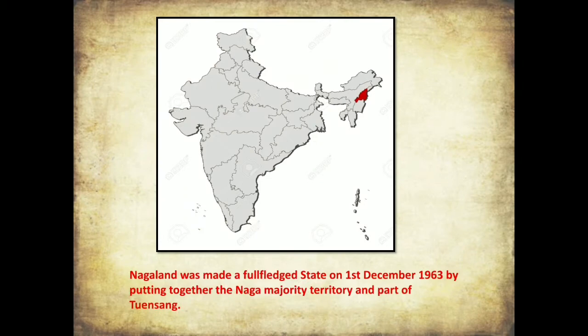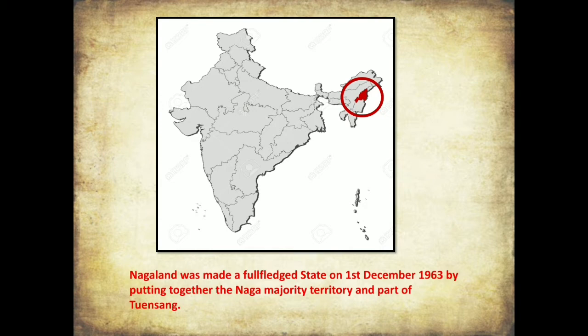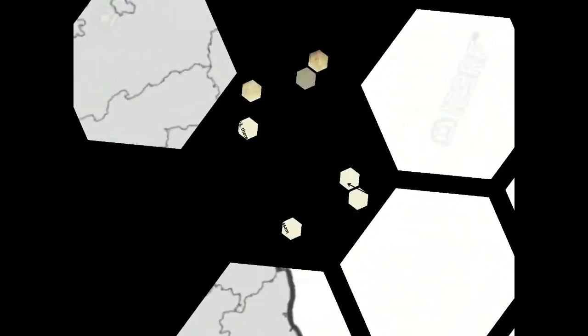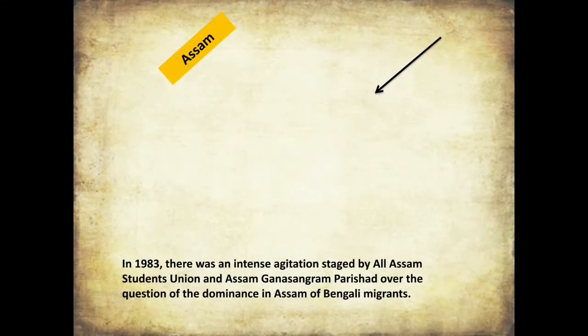After several rounds of discussions between the central government and the Naga National Council, the central government decided to grant the Naga-majority territory the status of a Union Territory. Nagaland was made a full-fledged state on 1st December 1963 by combining the Naga-majority territory with part of the Tuensang area.